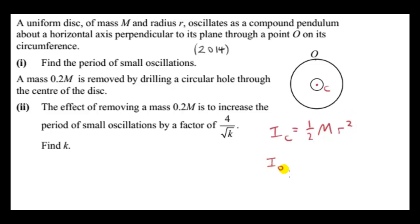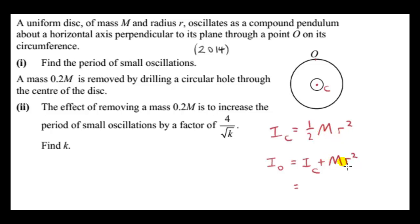Now we want the moment of inertia of the disc about point O, so we use the parallel axis theorem. The axis through the center of mass is parallel to the axis through point O — both go into the screen. The parallel axis theorem gives I_O = I_C + Md², where d is the distance from the center of mass to O, which is R. So I_O = ½MR² + MR² = 3/2 MR².